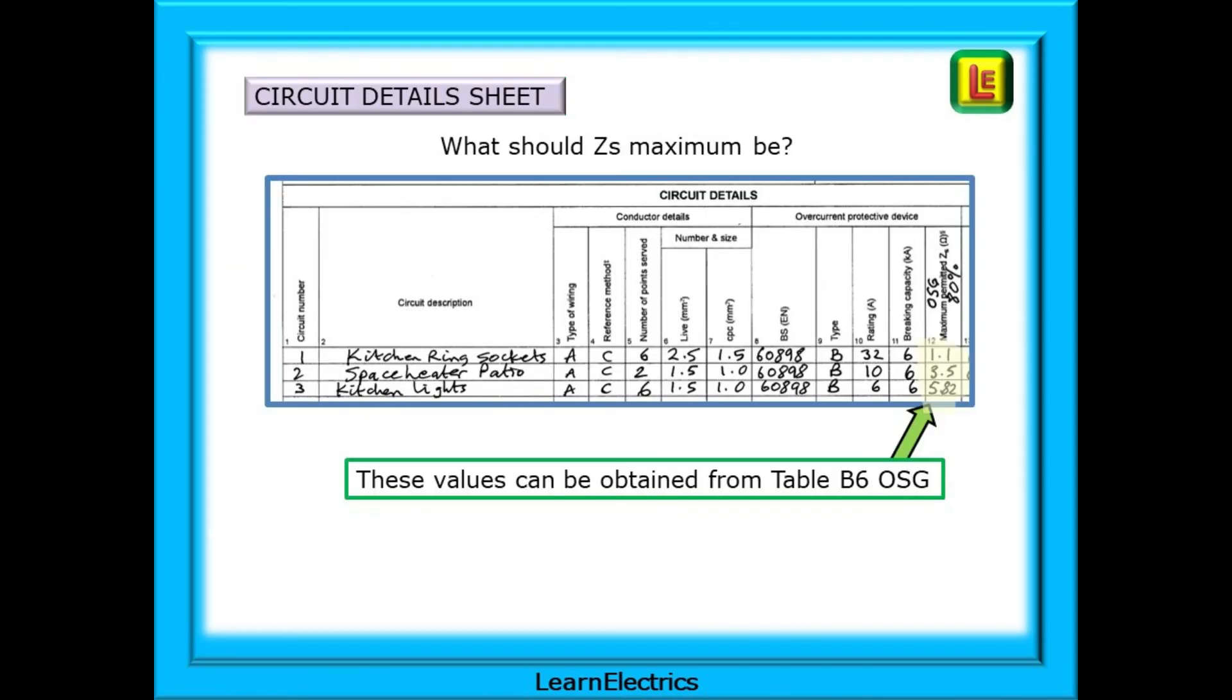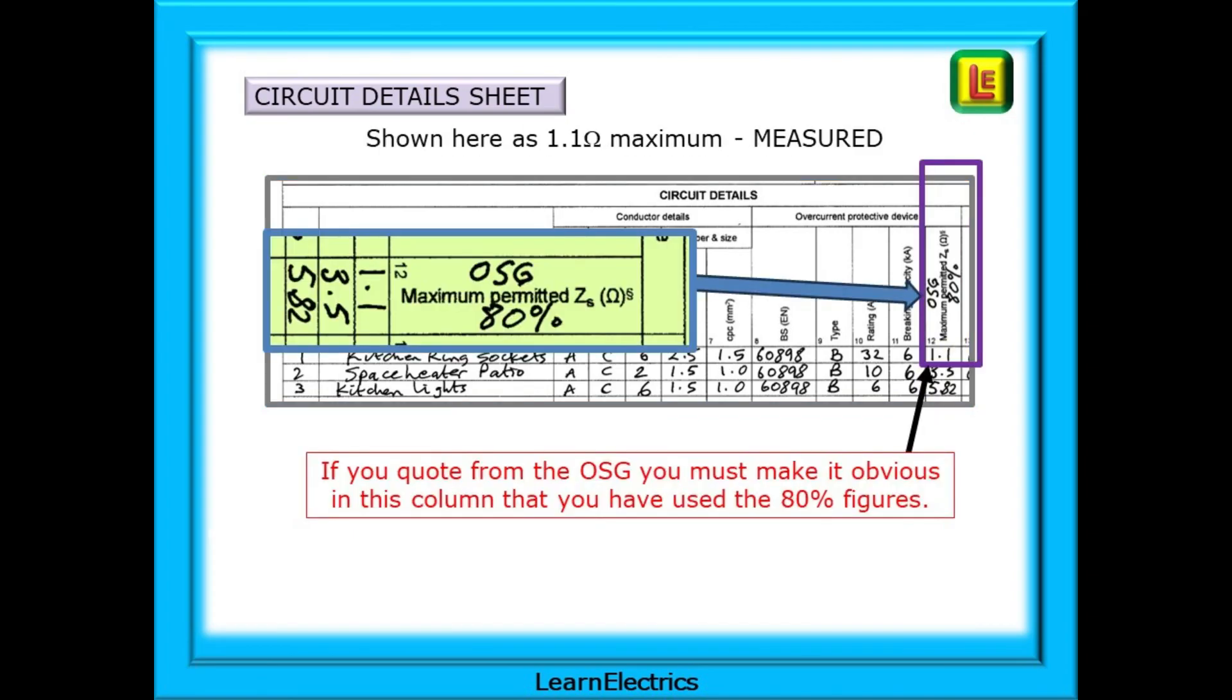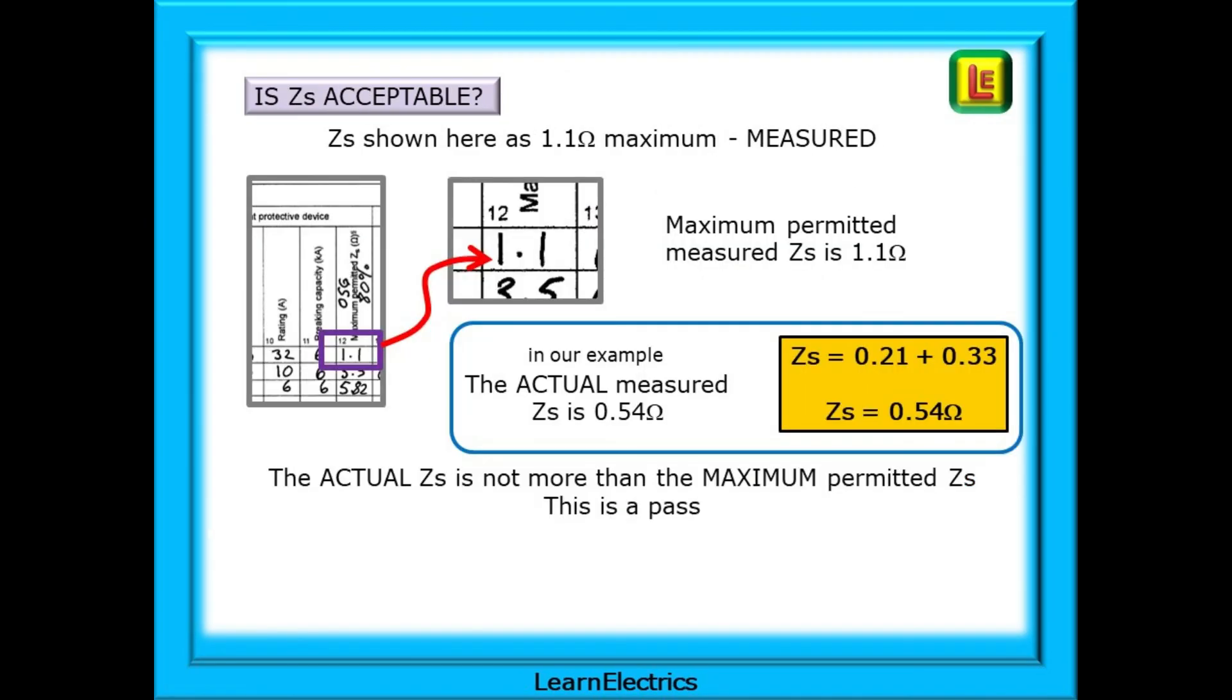We should compare this now to the maximum permitted ZS that we found in table B6 of the on-site guide, and also written on the circuit details sheet as shown here. I always quote from the on-site guide, so I always make it very obvious to any reader of my test data that this is an 80% figure taken from the on-site guide and not the 100% figure from the regs book. Maximum permitted ZS is 1.1 ohms, and we've measured and calculated ZS to be 0.54 ohms. This is a good result. 0.54 ohms is less than 1.1 ohms, so ZS is acceptable.